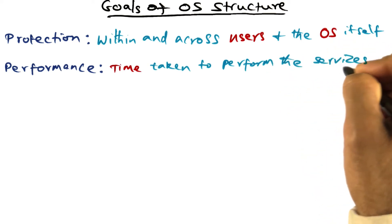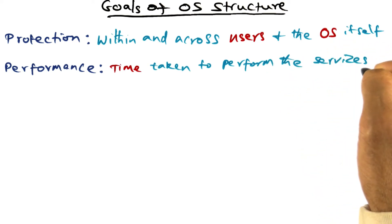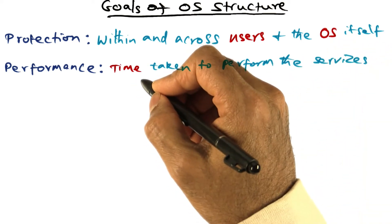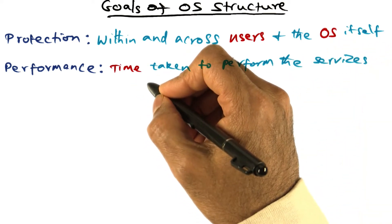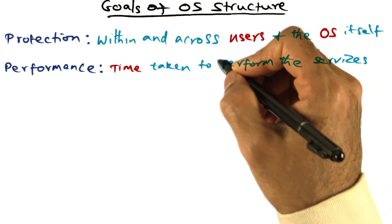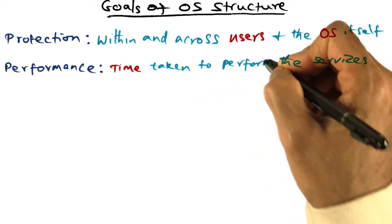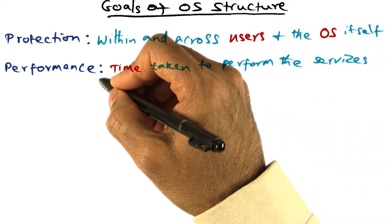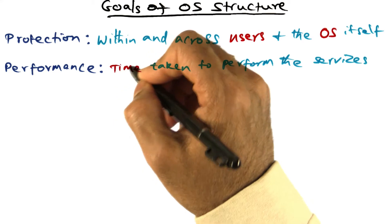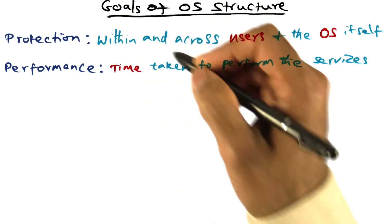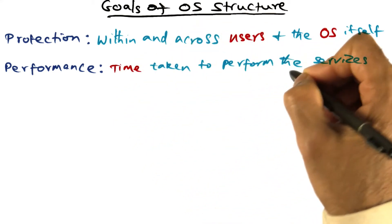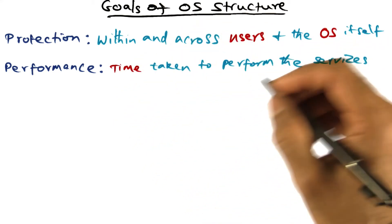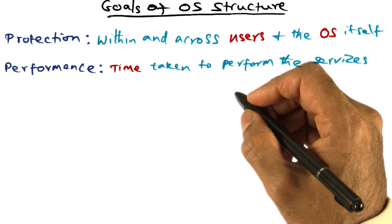An operating system, of course, provides services, and one of the key determinants of a good operating system structure is how good is the performance of the operating system. That is, what is the time taken to perform services on behalf of the application?